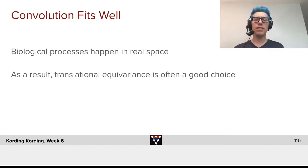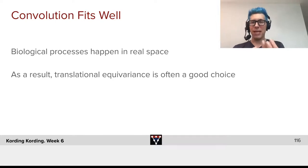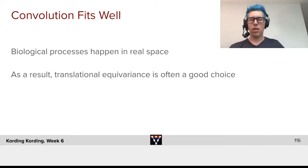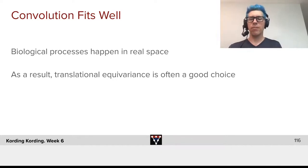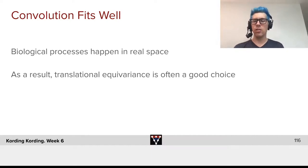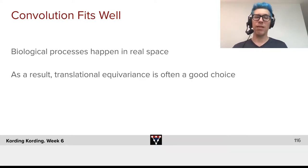Convolution often fits well in biology. Why? Biological processes happen in real space. If something happens locally, it could have happened at a different place. It has the same property where objects occur in a given position, just as a biological phenomenon can happen at a given space. As such, translational equivariance is a good choice, and we want translation-invariant recognition of the relevant phenomena.